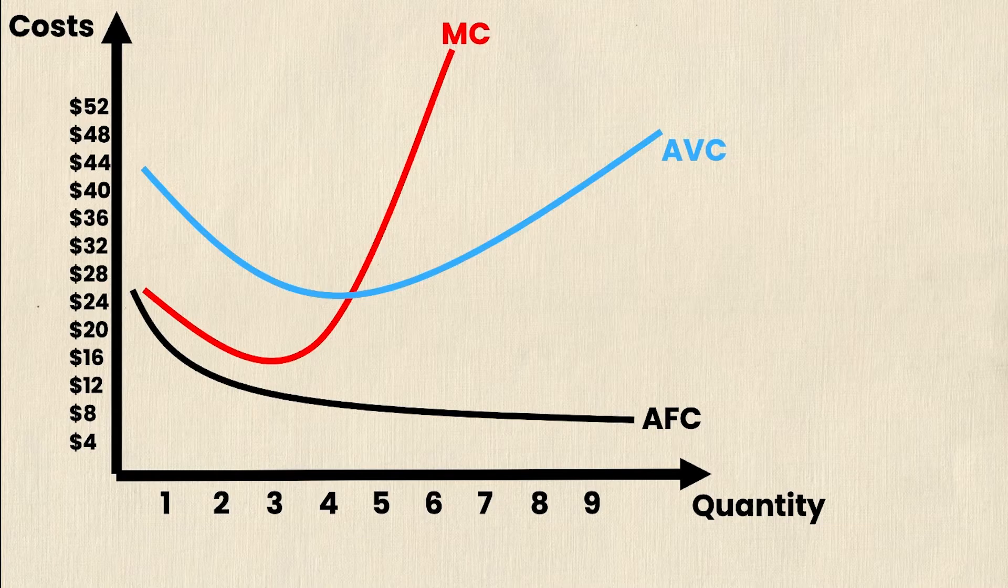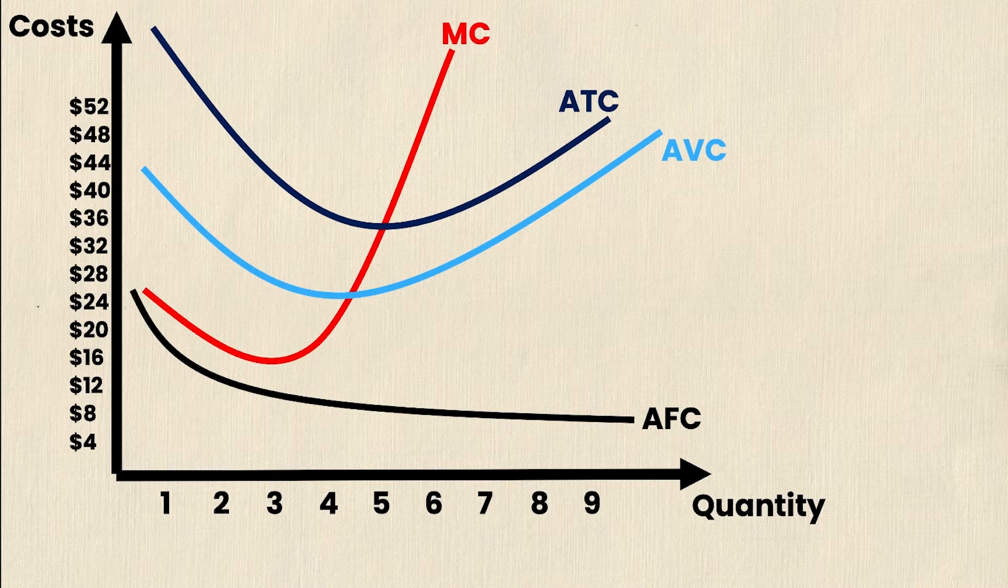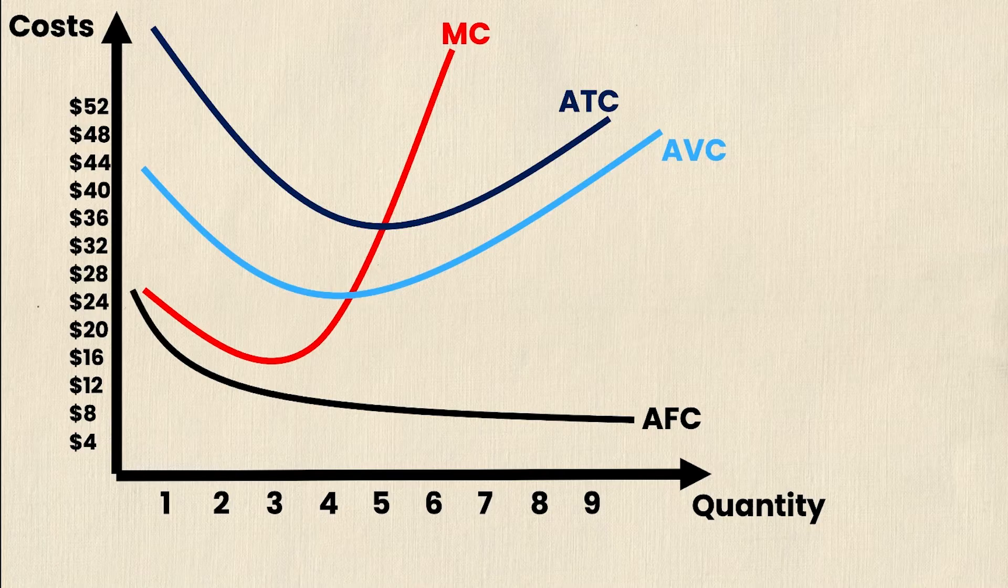Finally, we have the last per unit curve, which is the average total cost. That's simply the sum of the average fixed cost and the average variable cost. So it takes on relatively the same shape as the average variable cost, but it sits a little bit higher. The difference between those two curves is the amount of the average fixed cost. You'll notice that the marginal cost also intersects the average total cost at its minimum, and therefore the same principles apply, where when the marginal cost is less than the average total cost, the average total cost is decreasing. And when the marginal cost is greater than the average total cost, then the average total cost is increasing.